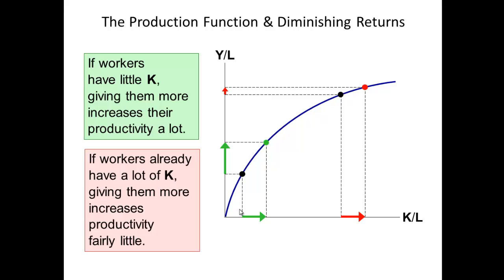The production function that we mentioned in our previous lecture shows the catch-up effect and diminishing returns. Here we look at the diminishing returns. What we have here is that if we have a worker that lives in a country where there is little capital, and we give them an increase in capital, then we will see that there's an increase in productivity — and that increase in productivity is much larger than